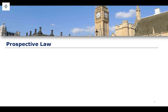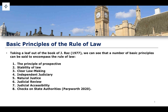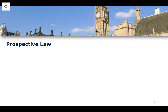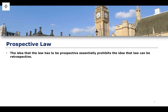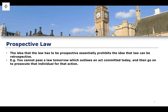Let's look at some of these in more detail. Clear law-making and an independent judiciary are relatively straightforward. More complex is the concept of prospectivity of law. The idea that law must be prospective essentially prohibits retrospective law-making. You could define this principle either positively — law must be prospective — or negatively — law should not be retrospective.